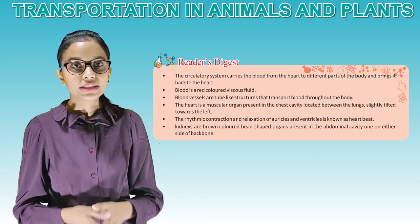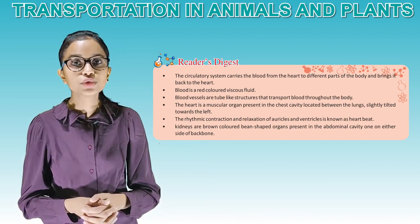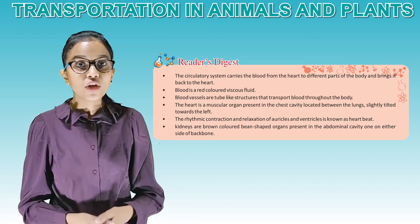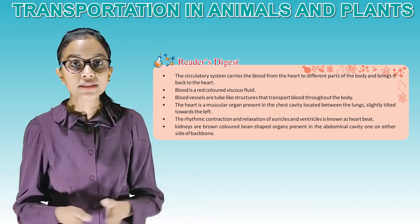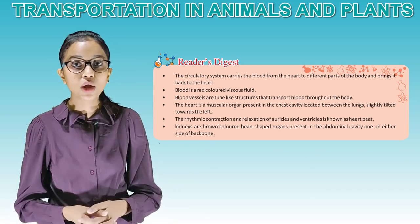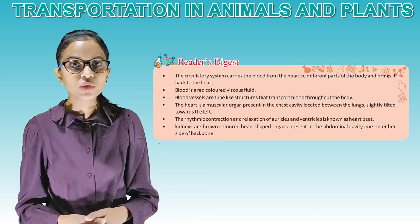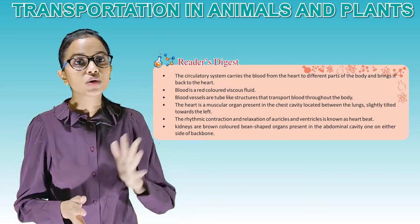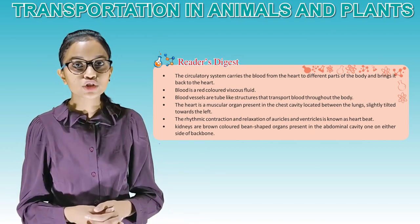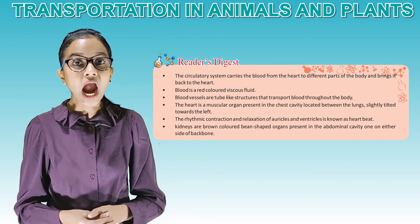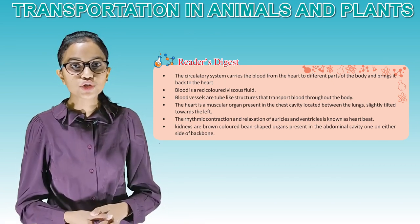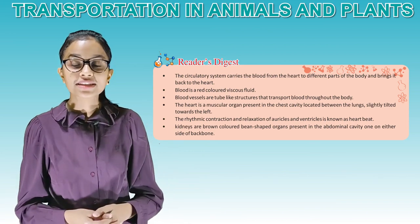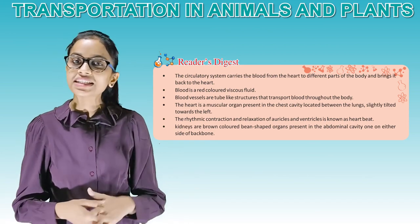The circulatory system carries blood from the heart to different parts of the body and brings it back to the heart. Blood is a red-coloured viscous fluid. Blood vessels are tube-like structures that transport blood throughout the body. The heart is a muscular organ present in the chest cavity, located between the lungs, slightly tilted towards the left. The rhythmic contraction and relaxation of auricles and ventricles is known as heartbeat. Kidneys are brown-coloured bean-shaped organs present in the abdominal cavity, one on either side of the backbone. That's all students — bye, we'll meet in the next class.